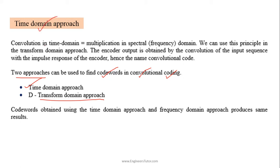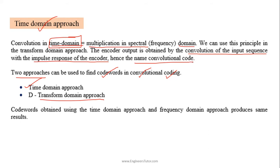In the time domain approach, the basic conceptual statement is: convolution in time domain is the same as multiplication in frequency domain. So here we use convolution in time domain. The encoder output is obtained by the convolution of the input sequence and the impulse response of the encoder — that is why this coding process is called convolutional coding.